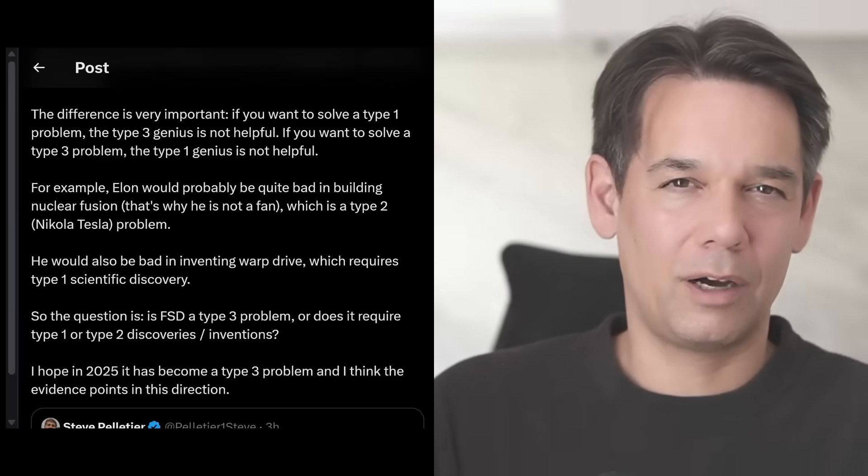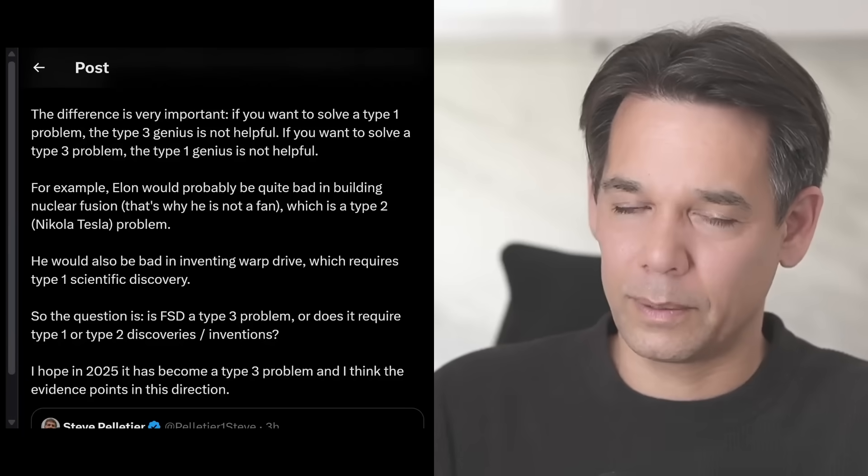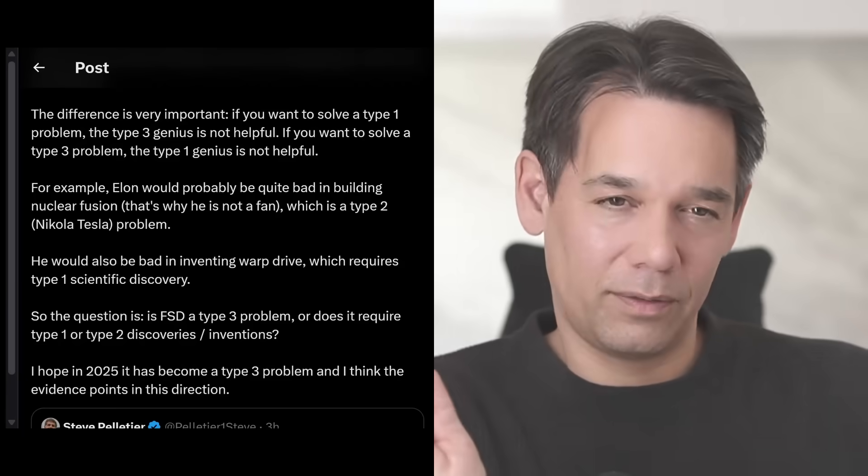Which means if there is any foundational invention that is missing on an algorithmic basis or model basis, the probability that the missing piece will be invented as we speak somewhere in the world in this crazy, crazy explosion of AI is also very high. So I think we have a double safety valve here that we are actually dealing with a type 3 problem. And if it's a type 3 problem, Elon is guaranteed to solve it. If it's a type 2 problem, Elon is not going to solve it.